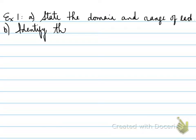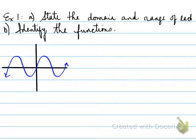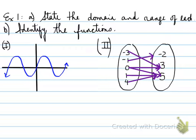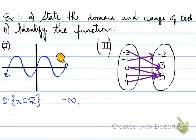Example one: state the domain and range of each and identify which ones are functions. The first one is a sinusoidal curve — the domain is x belongs to the reals. These arrows mean it oscillates up and down forever in both directions. In interval notation, the domain goes from negative infinity to positive infinity. We state the domain and range in interval notation.